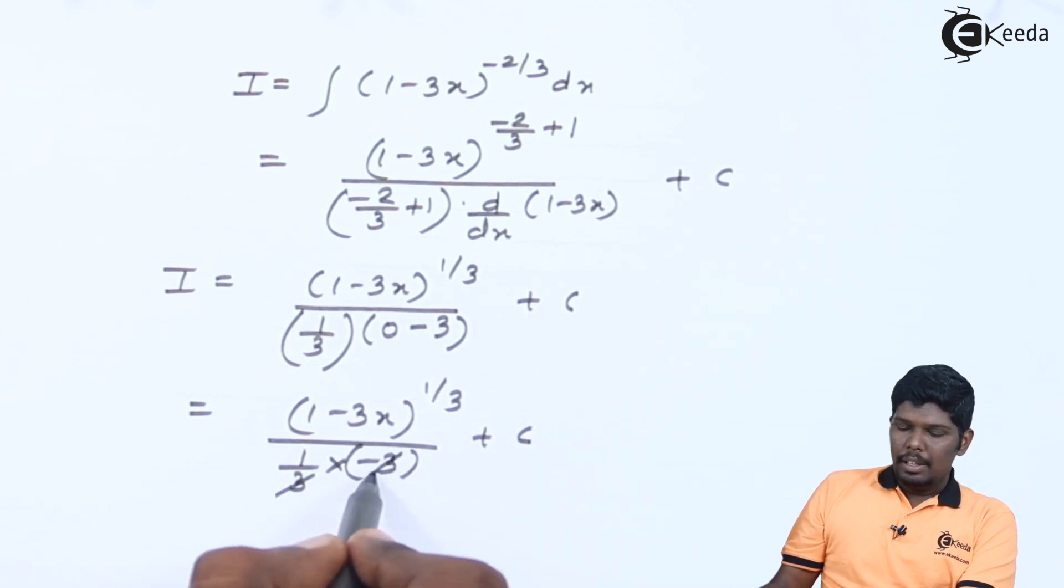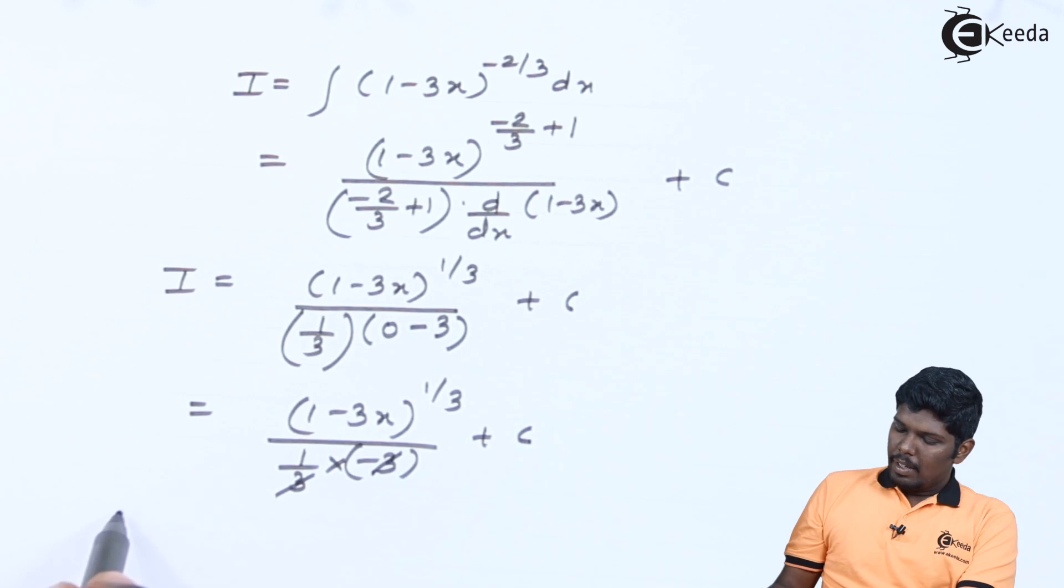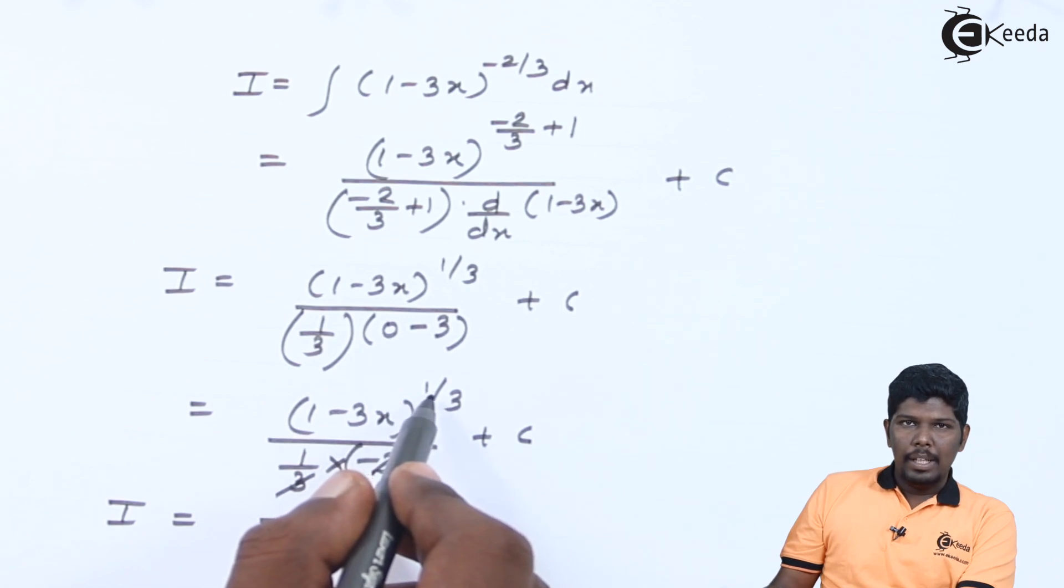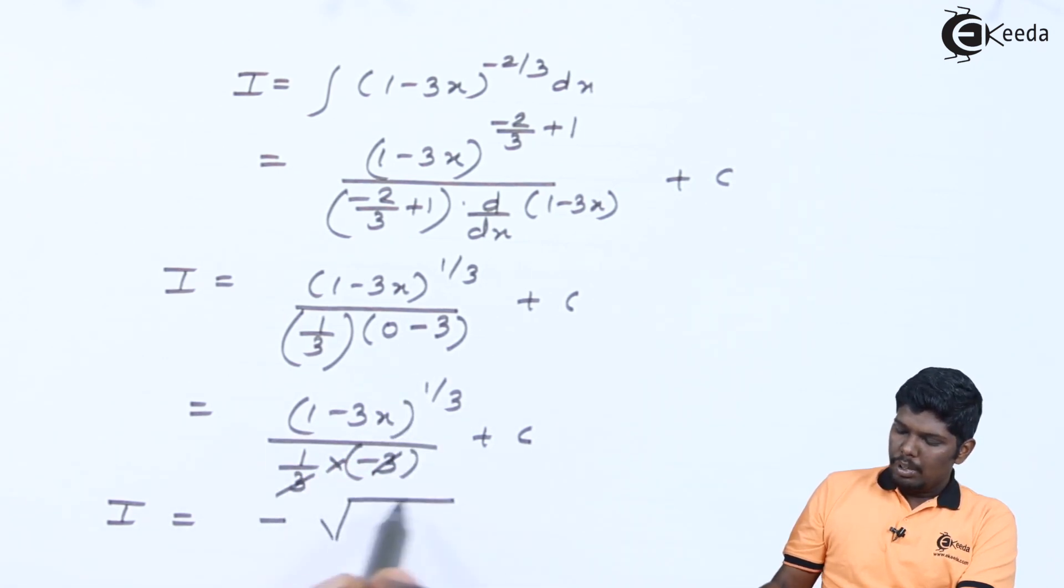3 will be cancelled and the remaining part we have I is equal to, taking minus sign in the numerator, (1 minus 3x) raised to 1 by 3 can be written as again cube root, cube root of (1 minus 3x) plus c.